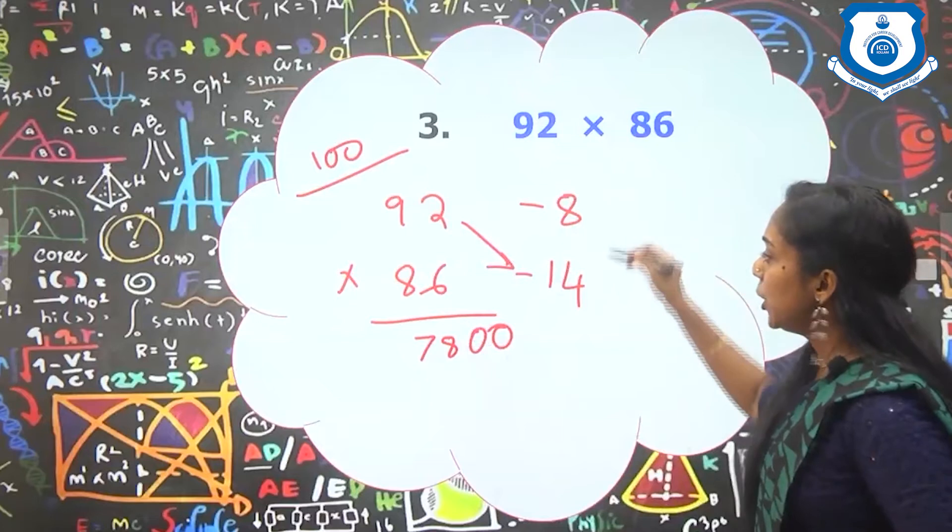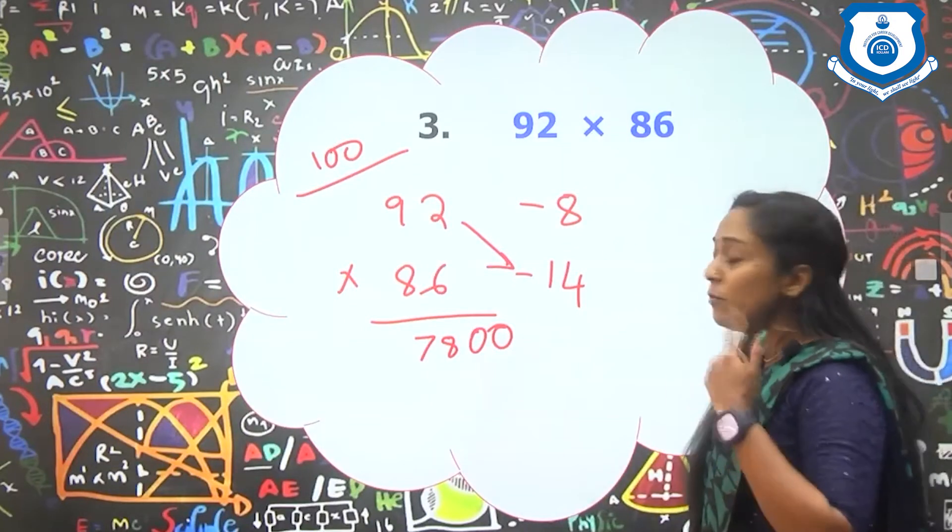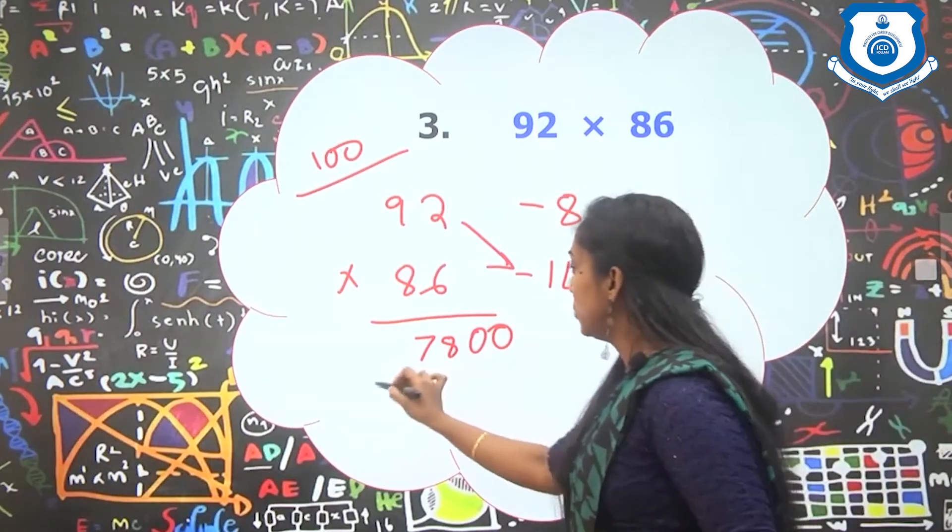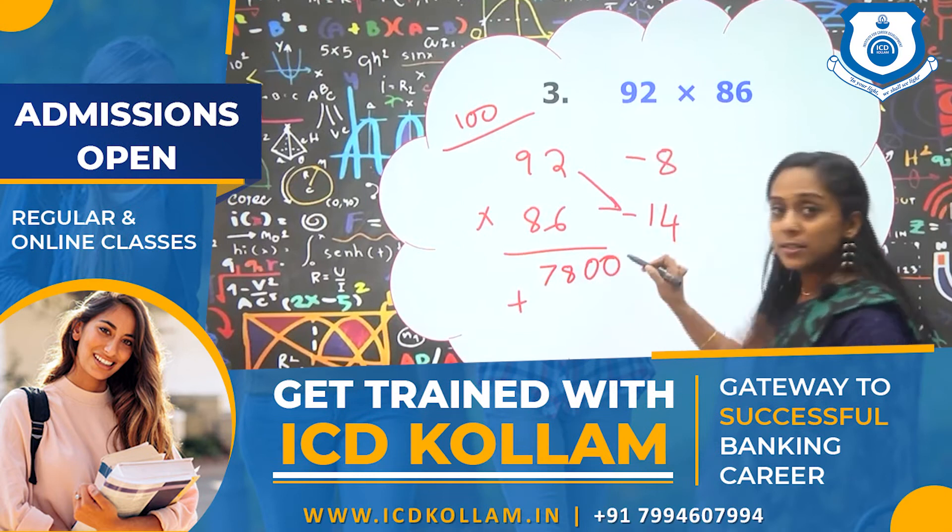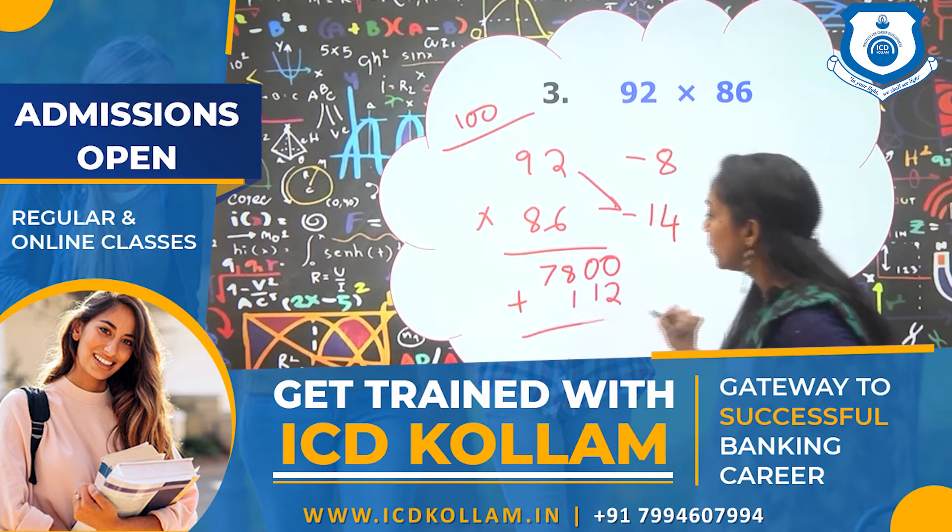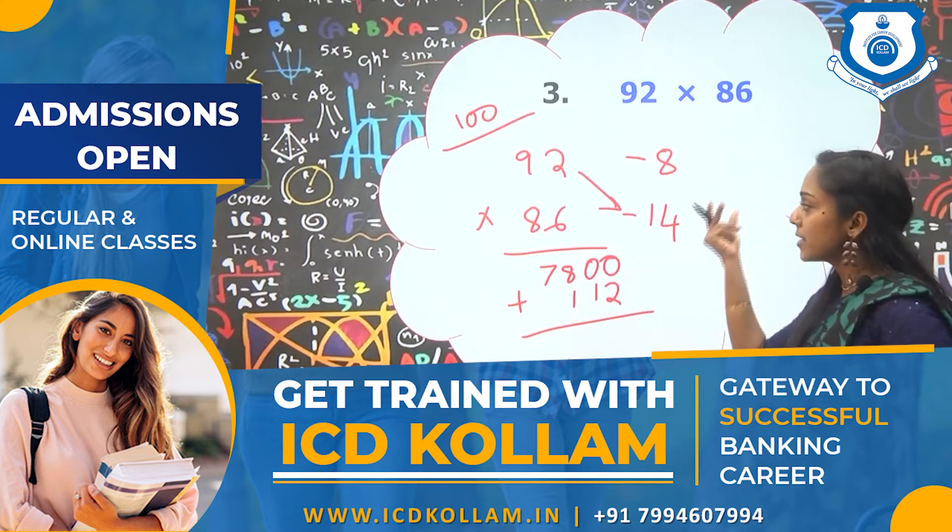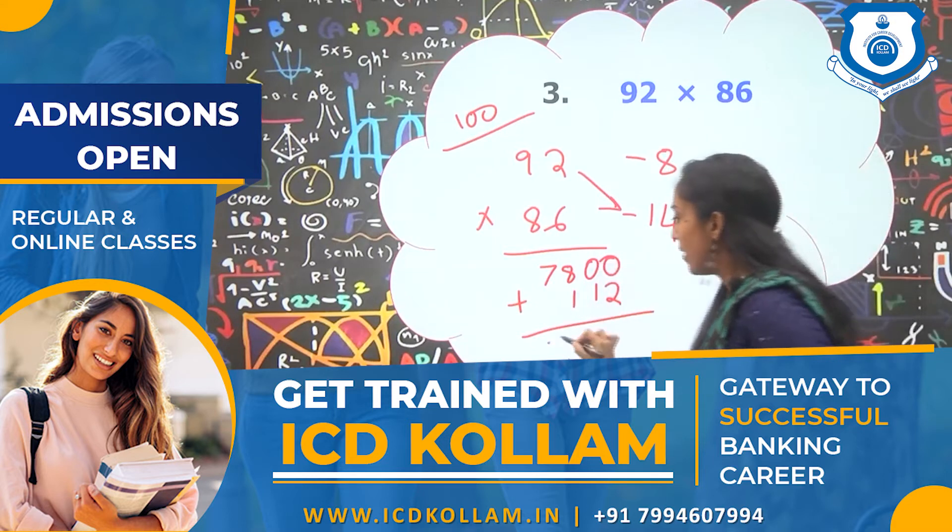Next, 8 into 14. So that is 112. Now add that 112. So minus into minus is plus. So that is plus 112. 112 is the product of minus 8 and minus 14. Now our answer is 7912.